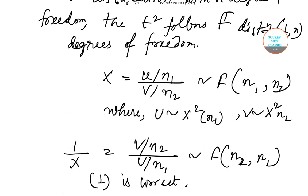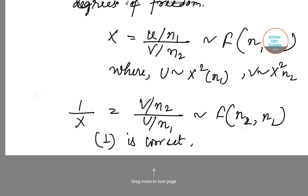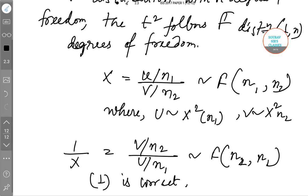I mean the consideration which is written in 1, that is: if F(n1, n2) represents an F variate with n1 and n2 degrees of freedom, then F(n2, n1) is distributed as 1/F(n1, n2) variate. So this consideration, number 1, is true. Let me add a page.